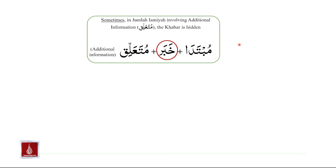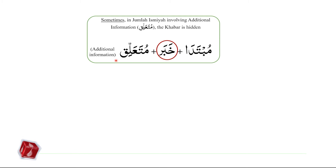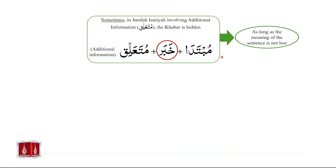Now we will study a very important concept. Sometimes in jumla-ismiyah, which involves additional information or mutallik, the khabar is hidden. In an example where we have muptada, khabar, and mutallik, sometimes the khabar is hidden. Please note that this rule is applicable as long as the meaning of the sentence is not lost.